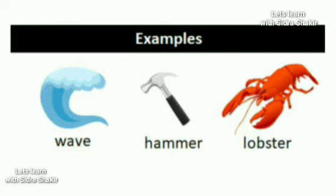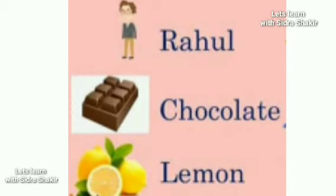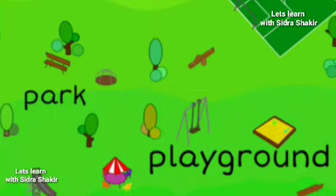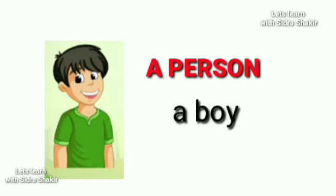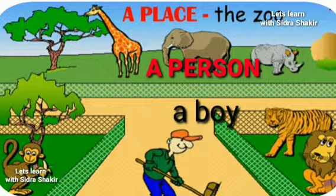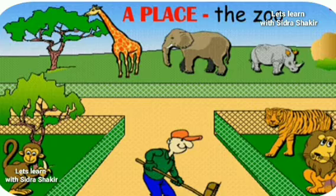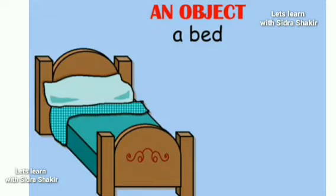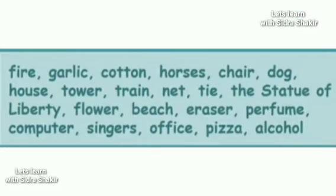For example: Wave, Hammer, Loopster, Rahul, Chocolate, Lemon, Fish, Book, Music, Park, Playground. A boy is a person. The zoo is a place. A bed is an object. These all words are concrete nouns. There are many more.